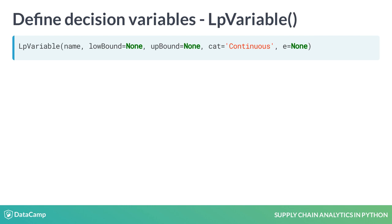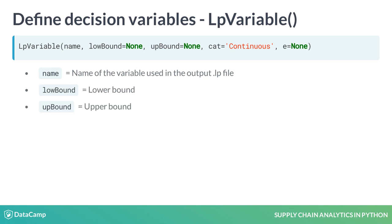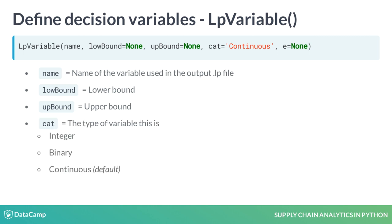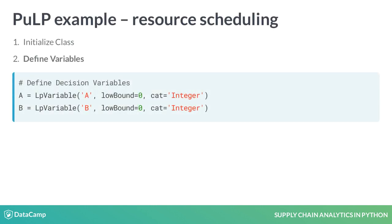Next, we look at defining the decision variables. For this, you will use the LP variable class. This class has five inputs. The first is the name of the variable. The next two set the lower and upper bounds of the variable. Their default value is none, which sets the bounds to negative infinity for the lower bound or positive infinity for the upper bound. The cat input categorizes the variable as either an integer, binary, or continuous. The last input is related to column-based modeling, which is outside the scope of this course. In our example, the variables are how many A and B cakes are produced. We only set the lower bounds and force them to be an integer variable.